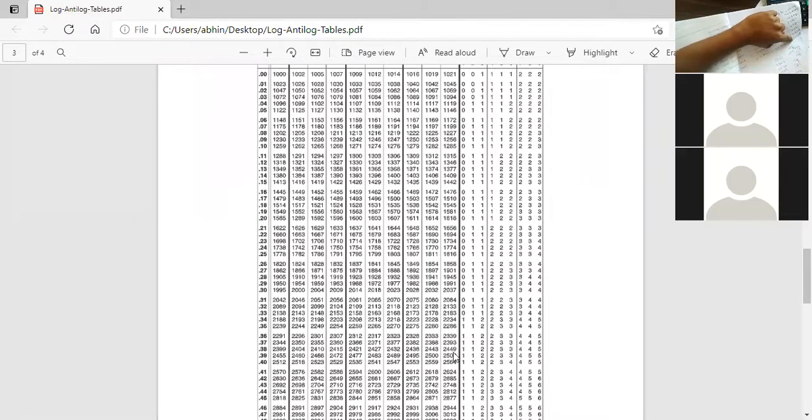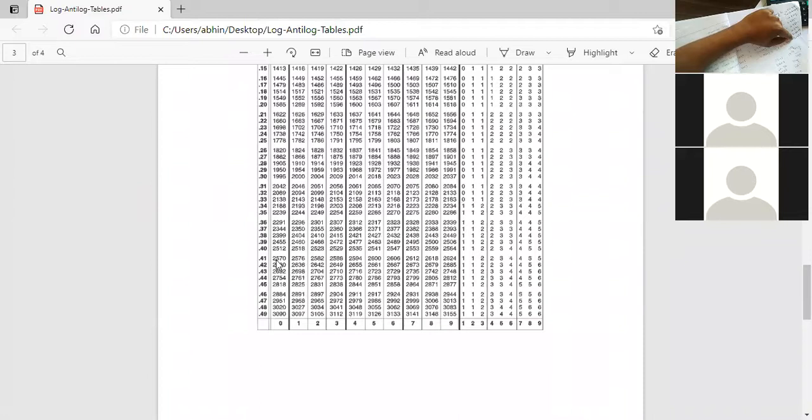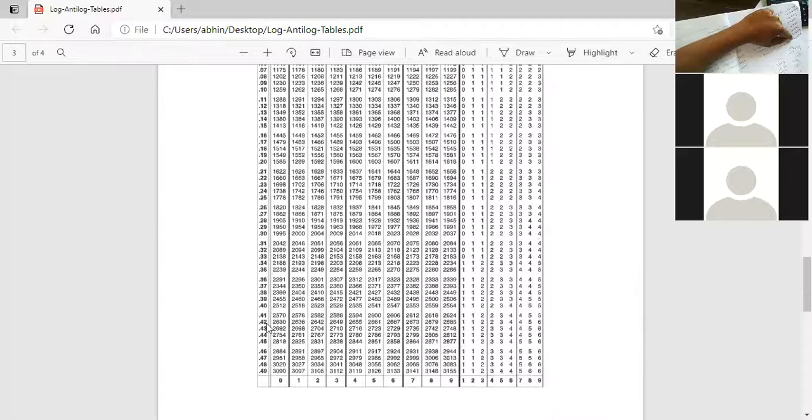And last one, 2.4167. So 41, 6th column, 2606, and 7th main difference 4. It makes 2610. So 261. We are done with this one.